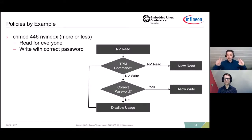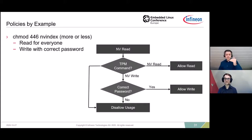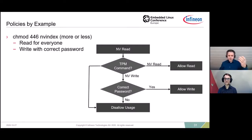Let's explain this with an example. An NV index is a small amount of memory in the TPM where you can store arbitrary data and lock it with policies. We create an NV index that can be read by everyone but requires a password to write - a bit like chmod 446. This really simple policy requires 25 function calls in ESAPI, and I do not want to write 25 function calls. With the introduction of the FAPI layer, things became much easier - you can specify your policy using a nice little language, or even better, a GUI.